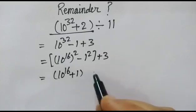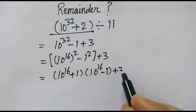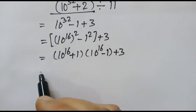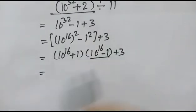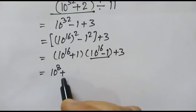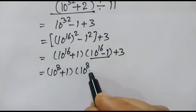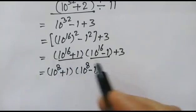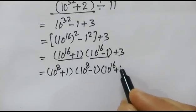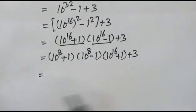Now we factor this as (10 to the power 16 plus 1) times (10 to the power 16 minus 1), plus 3. In the next step, we will work with this and write 10 to the power 8 plus 1 and 10 to the power 8 minus 1. Then we also have 10 to the power 16 plus 1 plus 3.